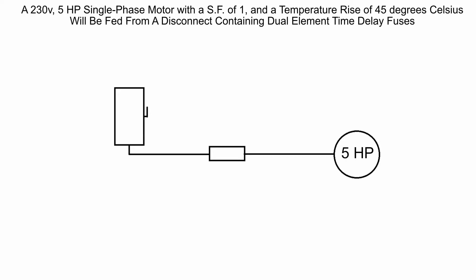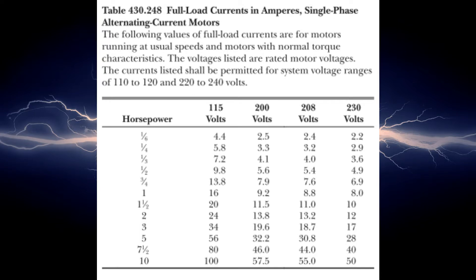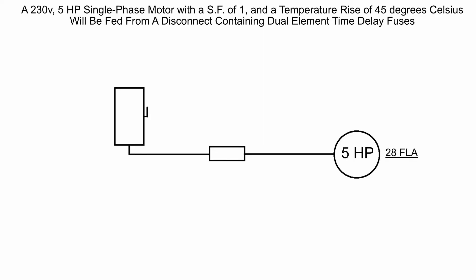The first thing we need to do is find the full load amps of this motor because we can't do a whole lot with just five horsepower. To do that we are going to go over to Table 430.248. This is the full load currents in amperes of single phase alternating current motors. We'll see that a five horsepower at 230 volts is going to be 28 full load amps.